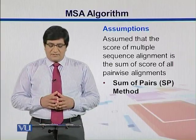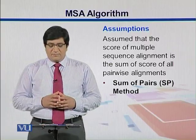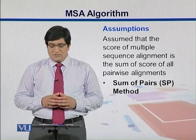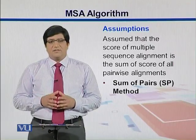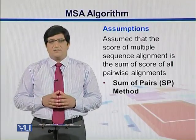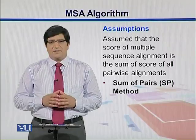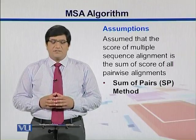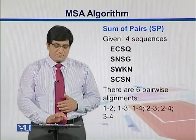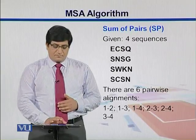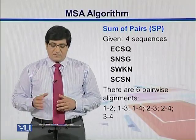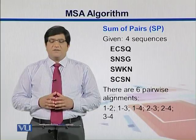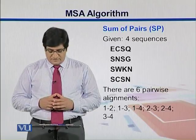This algorithm assumes that the score of multiple sequence alignment is the sum of the scores of all pairwise alignments. So there is a sum of pairs, or SP method, that has been implemented in this algorithm. Let's try to understand the sum of pairs method with an example.